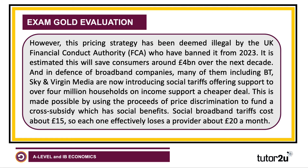But then we need to evaluate. However, this pricing strategy has been deemed illegal by the Financial Conduct Authority — indeed, they've banned it from 2023, this so-called dual pricing strategy — and it's estimated it's going to save consumers around £4 billion over the next decade. That's good background knowledge to impress examiners. In defence of broadband companies, many of them including BT, Sky, and Virgin Media are now thinking about or have introduced social tariffs — charging a lower price to lower income families — made possible by using the profits of price discrimination to fund a cross-subsidy.